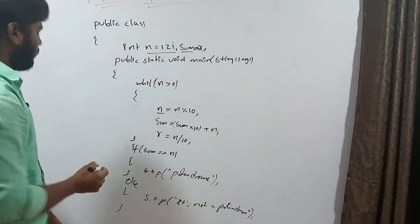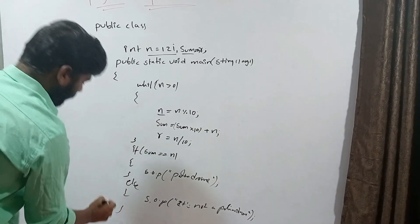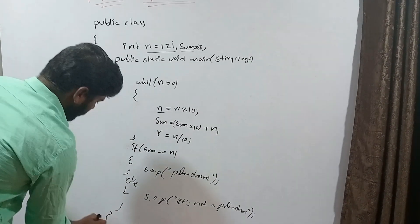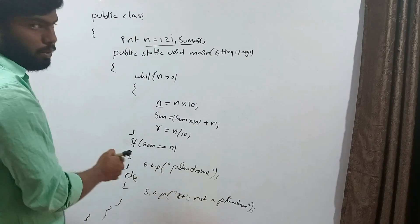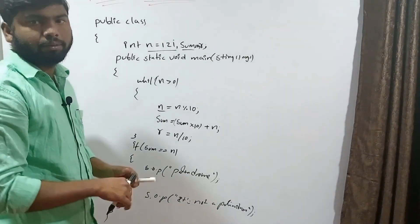We then close the main method and the class. That's the palindrome program.